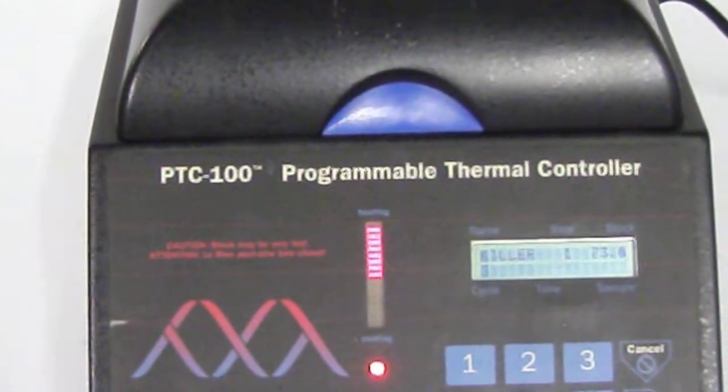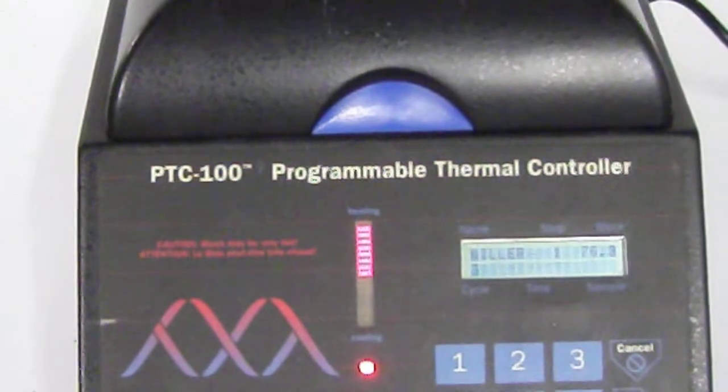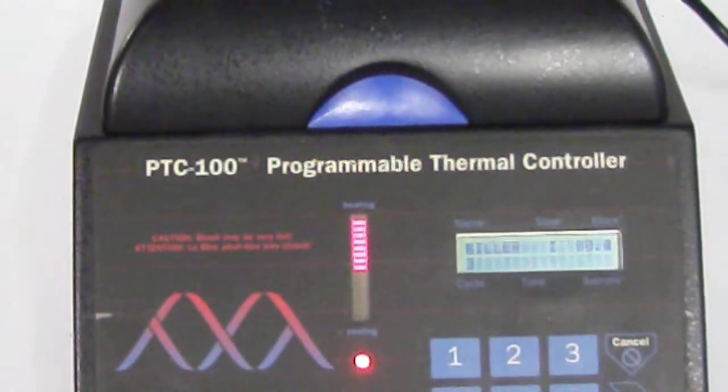Memory stores approximately 320 programs, and Cycler comes with 14 pre-programmed protocols.